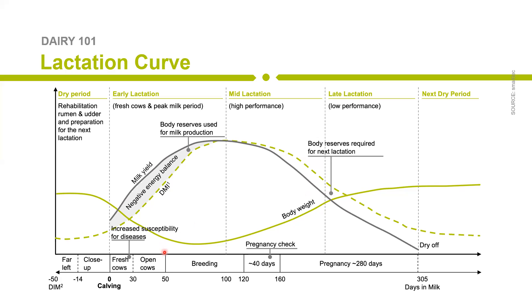After around 50 days in milk, breeding starts. You want to get the cow pregnant again, because otherwise the cow wouldn't yield any milk anymore — and a cow without milk is useless for the farmer. So at around day 50, you want to detect the heat of the cow — heat detection — and inseminate the cow so she gets pregnant again. This is a complicated diagram; one could talk 30 more minutes about it.